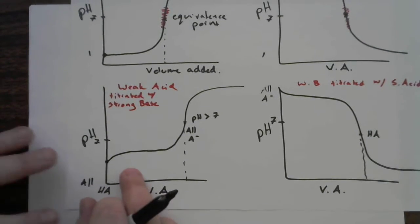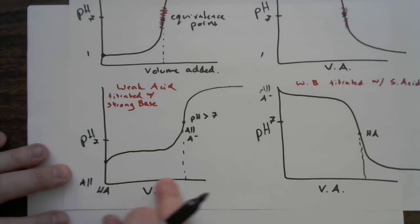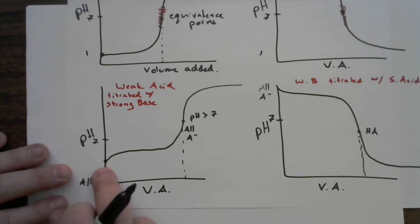All right, we're going to do one more video here where we're going to look in detail at how you could calculate the pH of a solution anywhere along a titration curve. The example I'm going to use is what it would look like for a weak acid being titrated by a strong base.